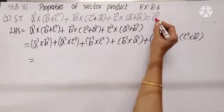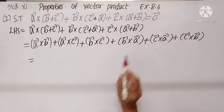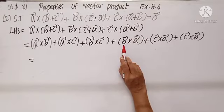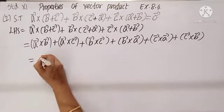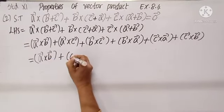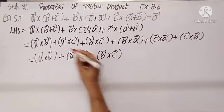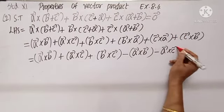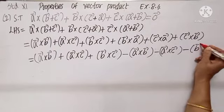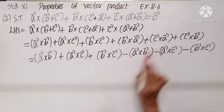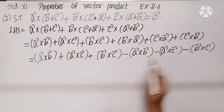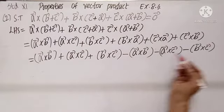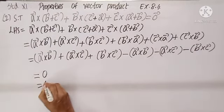Now I need to show the result is 0, meaning the terms must mutually cancel. Writing the first three terms as is: A cross B + A cross C + B cross C. Then reversing the last three — since cross product is not commutative, reversing gives a negative sign: minus A cross B, minus A cross C, minus B cross C. So A cross B cancels, A cross C cancels, B cross C cancels, leaving 0, which equals the RHS.